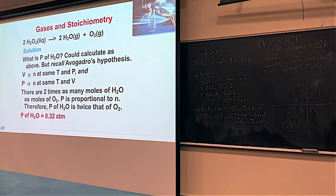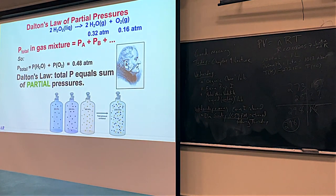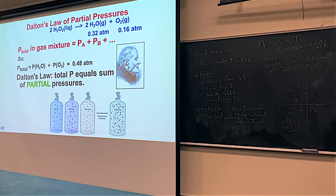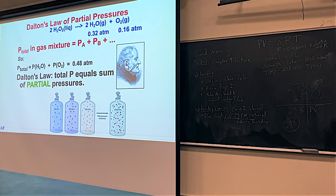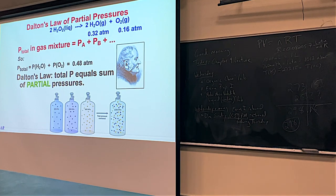This example of gas pressures being proportional to stoichiometries is best expressed by Dalton's Law of Partial Pressure. The air we breathe is about 20% oxygen and almost 80% nitrogen — it's a mixture. Dalton figured out that in the H₂O₂ flask, the total pressure equals the sum of the individual partial pressures: 0.32 + 0.16 = 0.48 atmospheres.